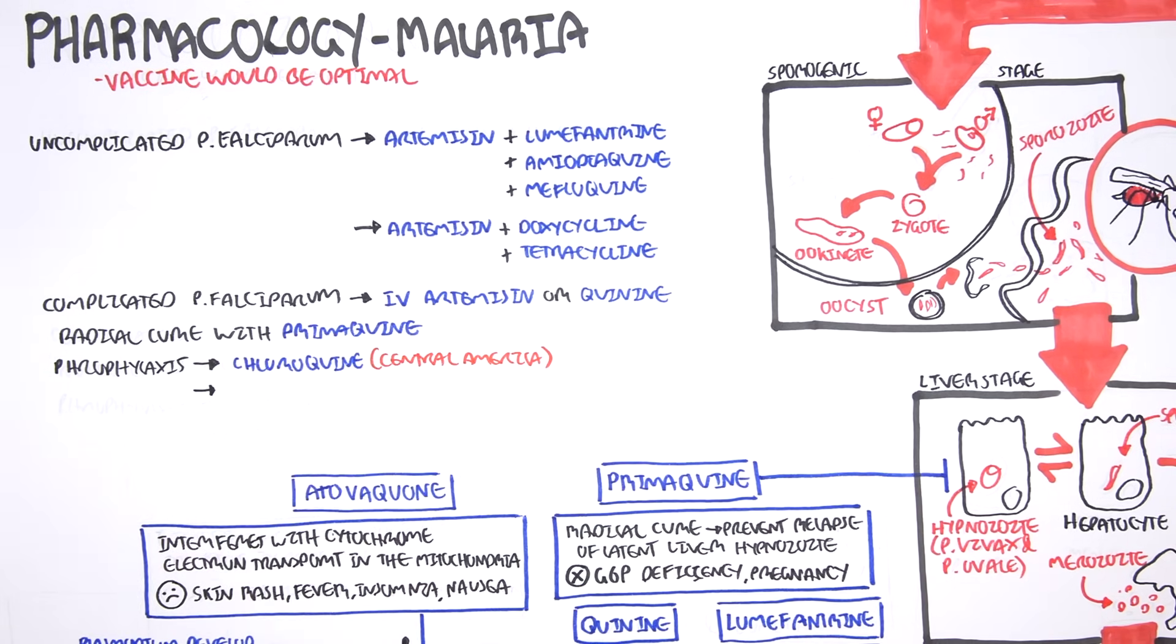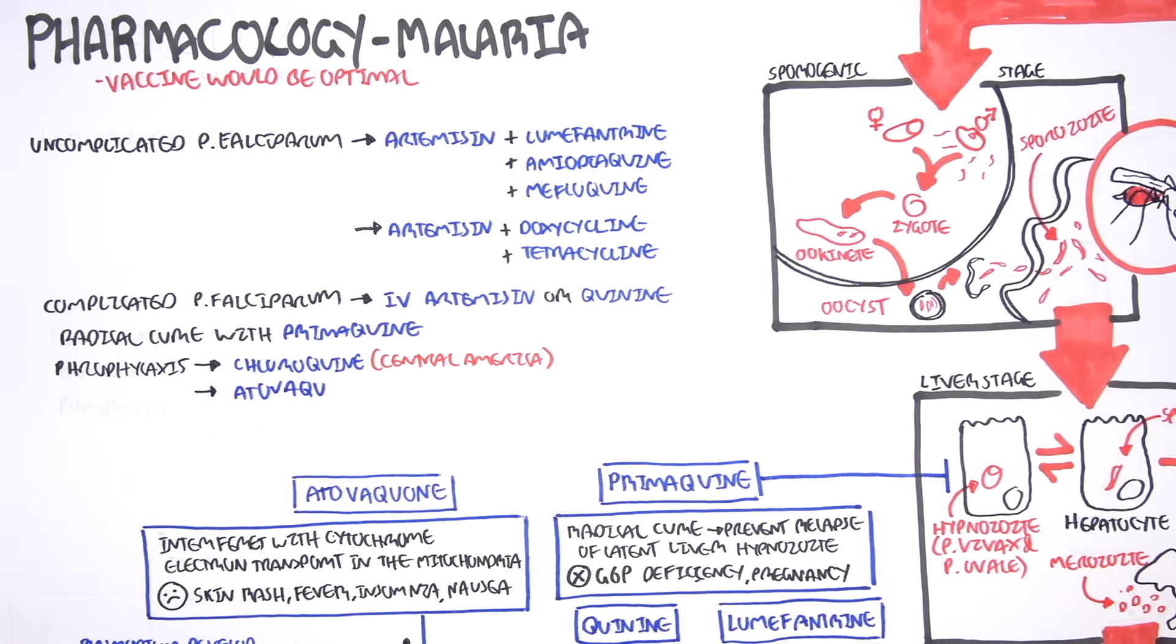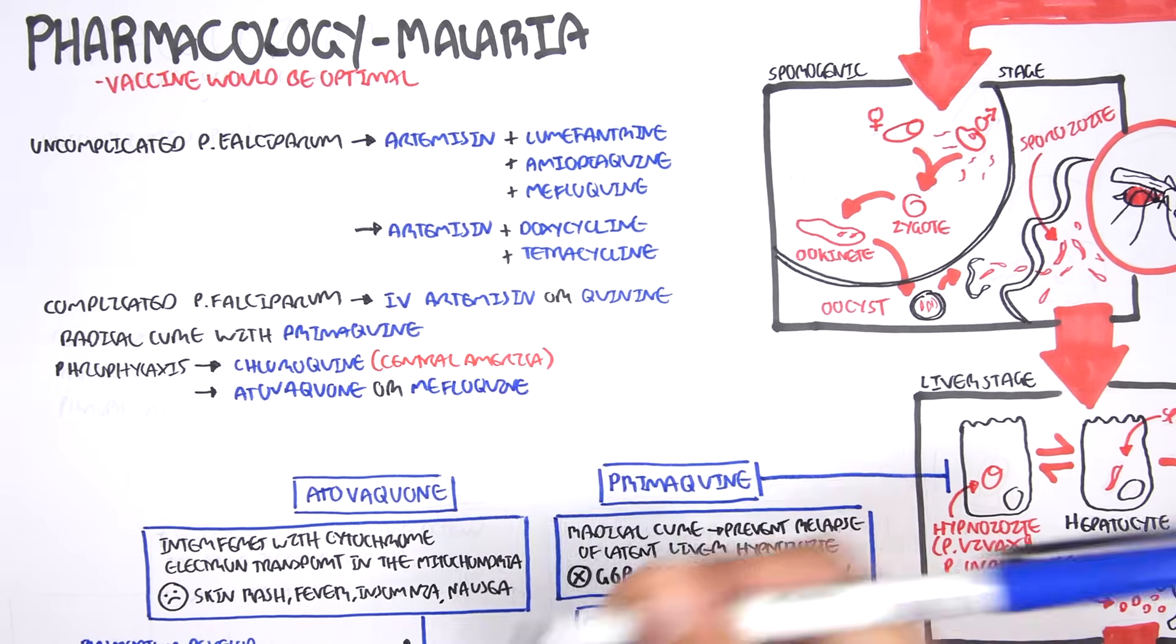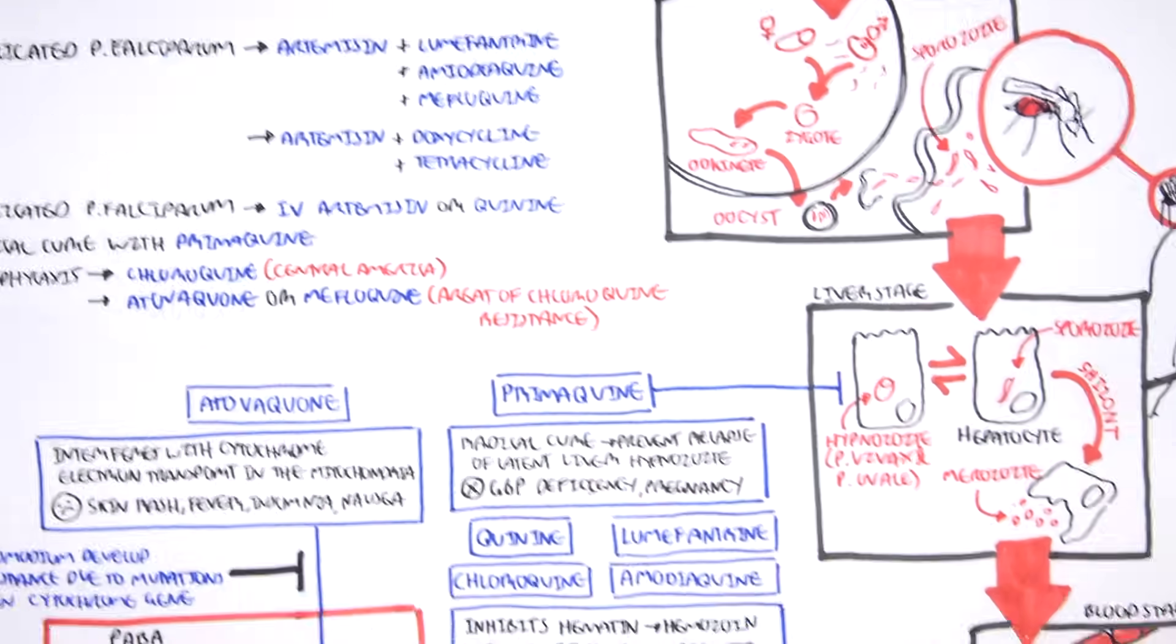But if the traveler is going to places where the malaria parasites are chloroquine resistant, we would give them atovaquone or another type of quinolone.